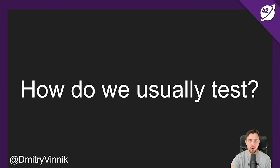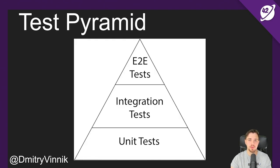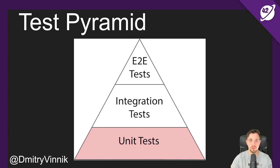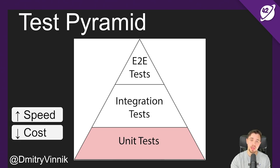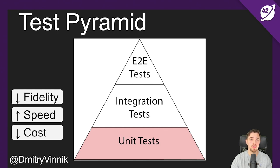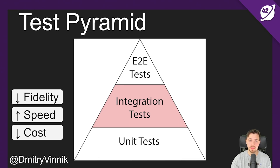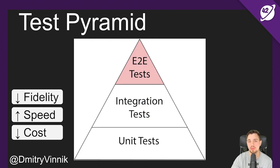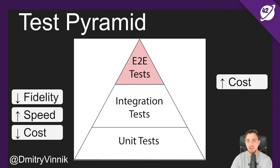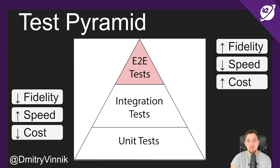How do we usually test? The test pyramid is a good guidance when talking about testing. The first level — unit tests — tests a single function or unit of work. They are the cheapest to write and maintain, the fastest, but give you the lowest level of confidence in your overall application. Integration tests take place next, testing multiple functions and components and how they interact. Last is end-to-end tests, going through the user scenario. They are the most expensive, the slowest, but give you the highest level of confidence.